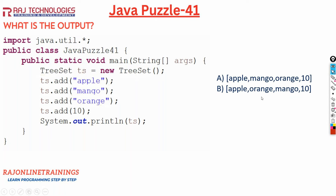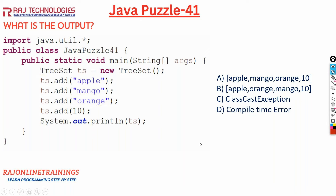Option B is apple, orange, mango, 10 — the main use of TreeSet is to arrange elements in sorted order, by default ascending order, so it goes with ascending order like apple, orange, mango, and 10. Option C is ClassCastException, meaning it throws an exception. Option D is a compile error. Now let us understand what the correct result of this puzzle is.